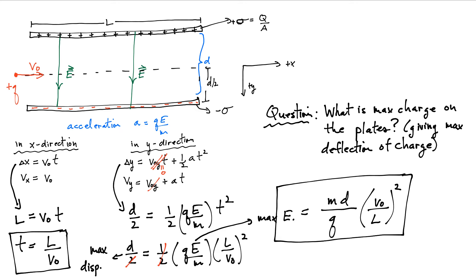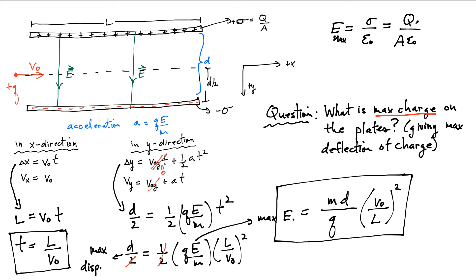The question was actually posed in terms of the charge on the plates. For parallel plates, the field between the plates is sigma divided by epsilon zero, where sigma is the surface charge density — the amount of charge per unit area. The maximum electric field corresponds to maximizing the charge density or the charge on the plates.